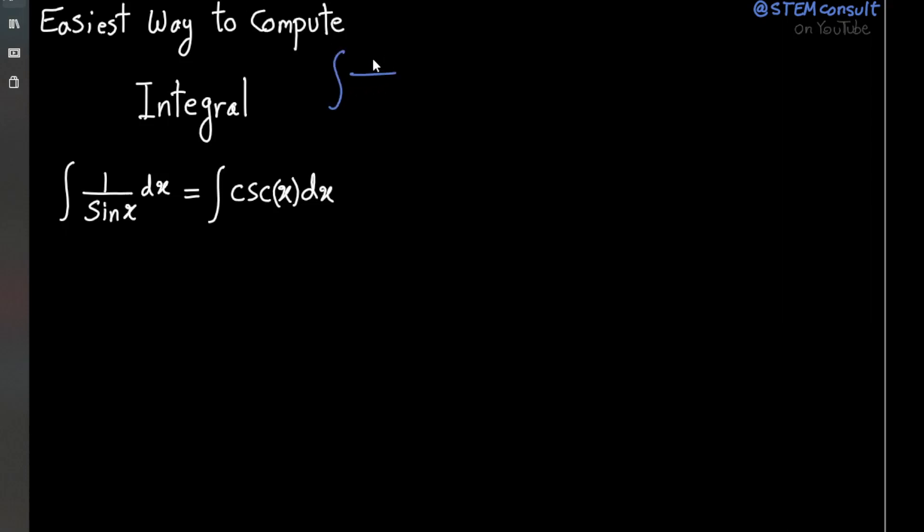So let's start with 1 over sine x dx, and let's use the well-known trigonometric identity to rewrite the denominator in the form of 2 sine x over 2 cosine x over 2 dx.